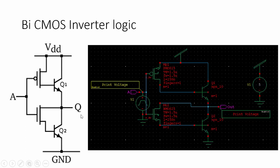This is the schematic representation of a BiCMOS inverter. The BiCMOS inverter contains two MOS transistors — one PMOS, one NMOS transistor — and two NPN transistors.